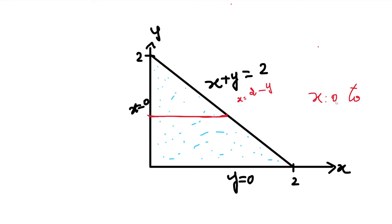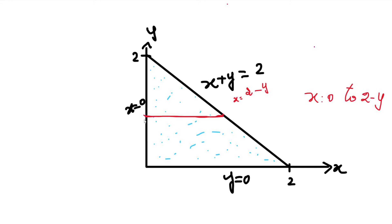So, x varies from 0 to 2 minus y. If we strip this region using horizontal strips, the left-hand touch is the line x equal to 0, giving the lower limit as 0. The right-hand touch is the line x plus y equal to 2, which gives x equal to 2 minus y as the upper limit. So the x limit is 0 to 2 minus y.